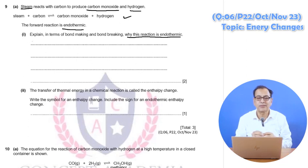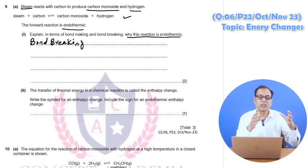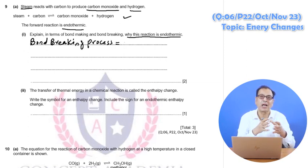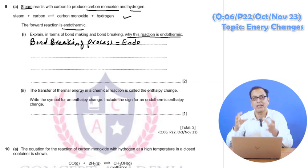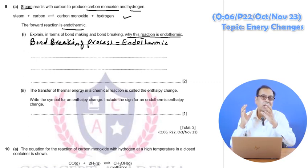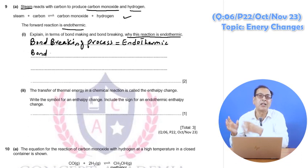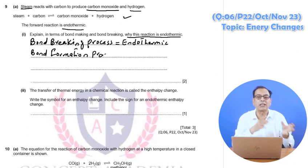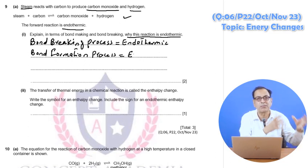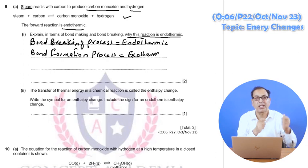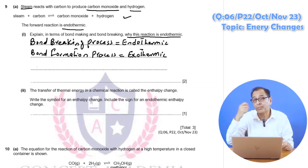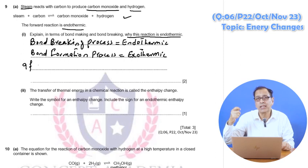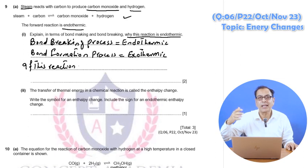This reaction is endothermic because on the reactant side the old bonds are broken, and on the product side new bonds are made. New bonds can only be made when old bonds are broken. Bond breaking is endothermic, and bond making releases energy.